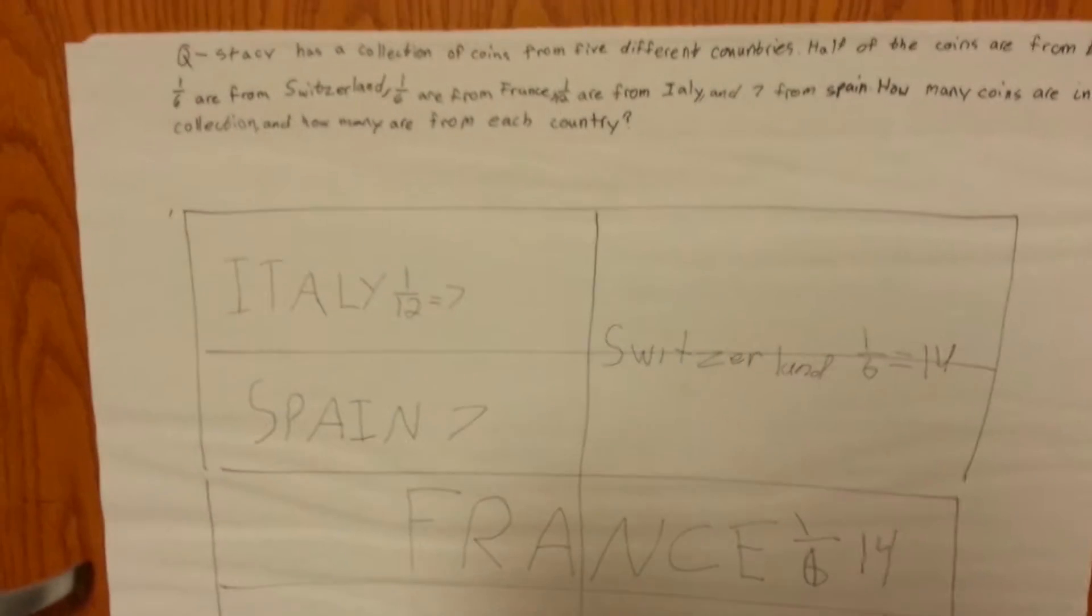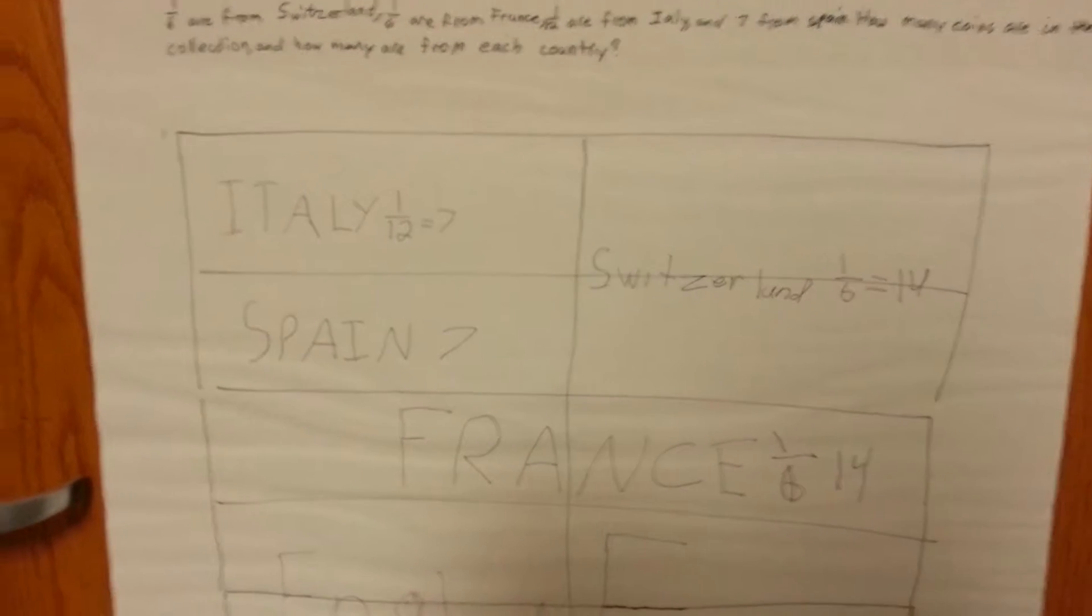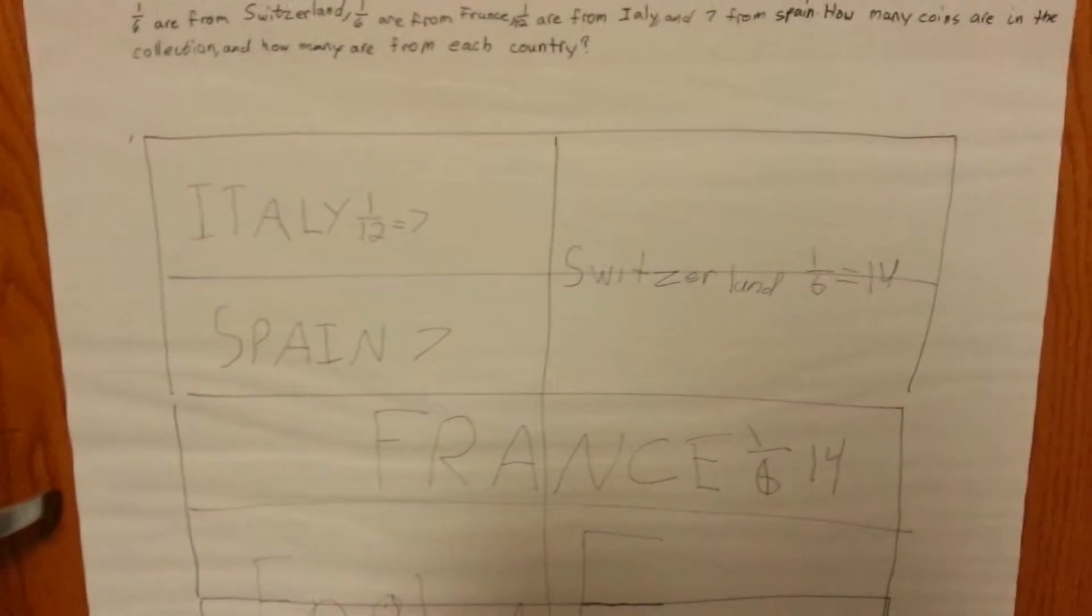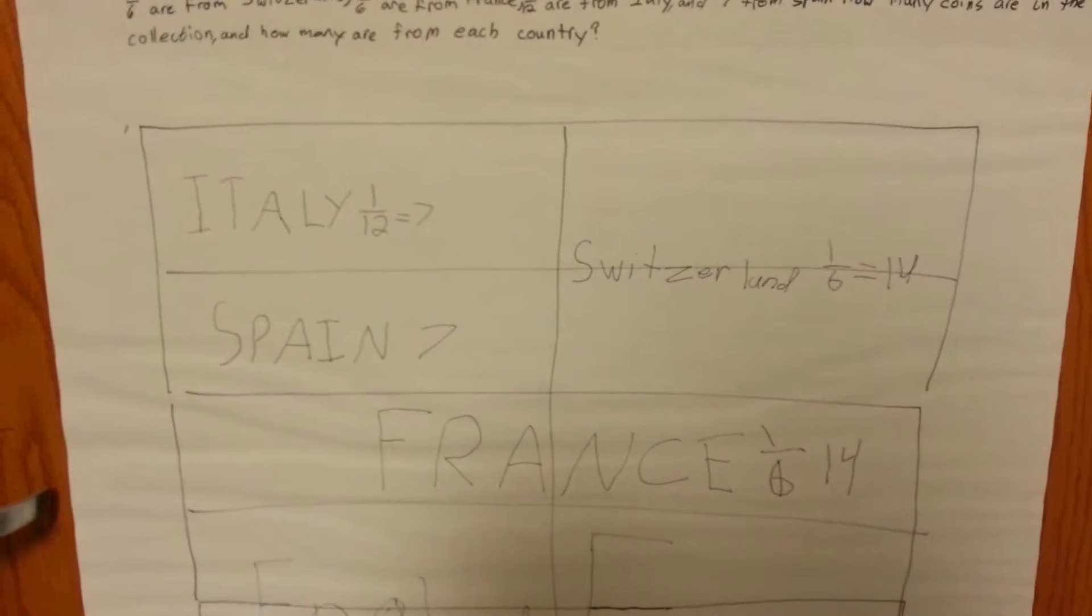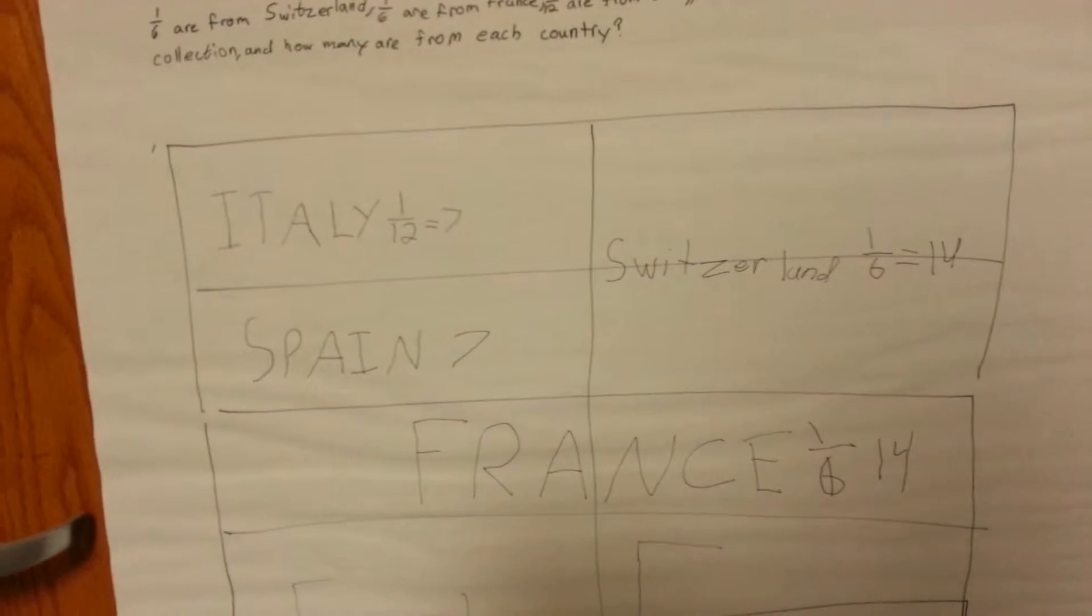Okay, this is the coin problem where it tells you that half are from England, a sixth are from France, and a sixth are from Switzerland, and one twelfth are from Italy. But they tell us that seven are from Spain. Okay, so how did you solve the problem?